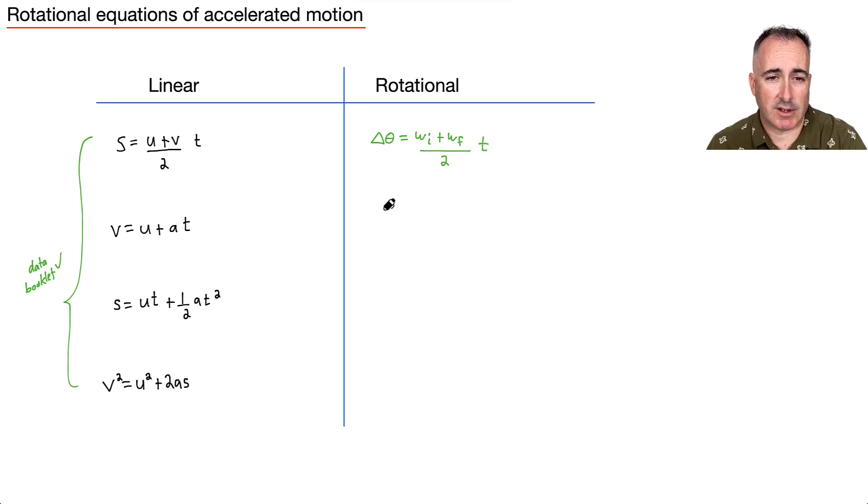Okay, this one here, instead of v, we say omega f. And this one here says u, which is omega i. And then plus at, well, in this case, it's going to be plus alpha times t.